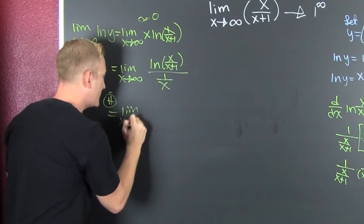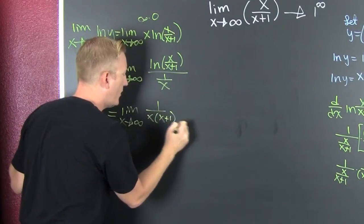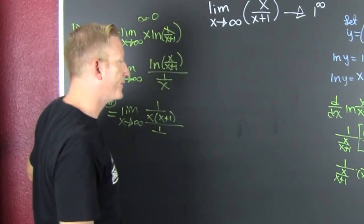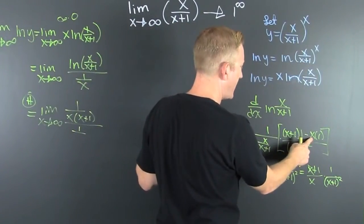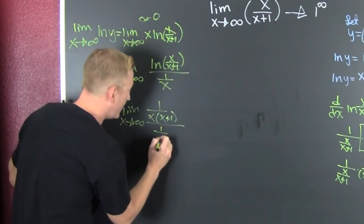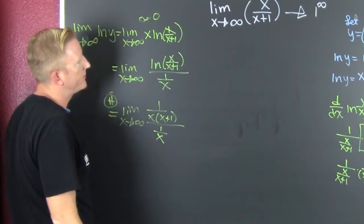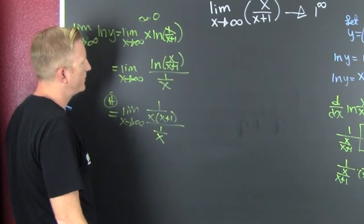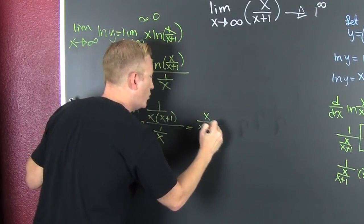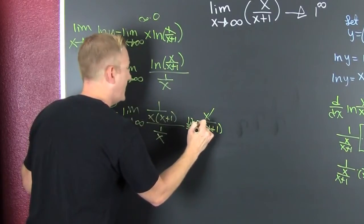That was the derivative at the top. So this is the limit as X goes to infinity of one over X times X plus one, over one over X. Dividing by a fraction is the same as multiplying by the reciprocal. So then that's X over X times X plus one. Limit as X goes to infinity.